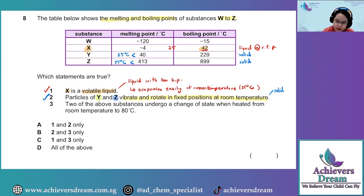Now, what about statement 3? Two of the above substances undergo a change in state when heated from room temperature to 80 degrees Celsius. So let's consider this. W, X, Y and Z. At room temperature, which is around 25 degrees Celsius,